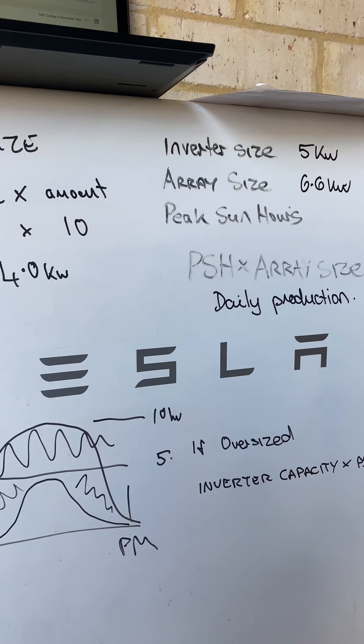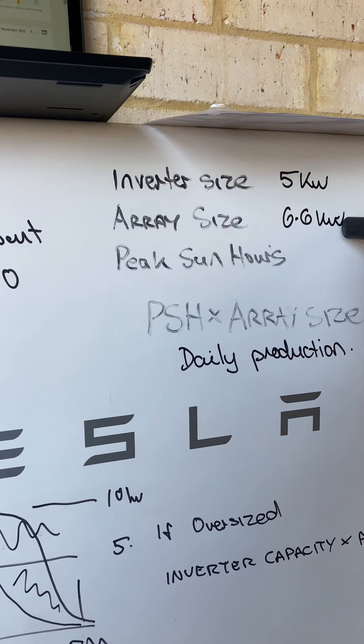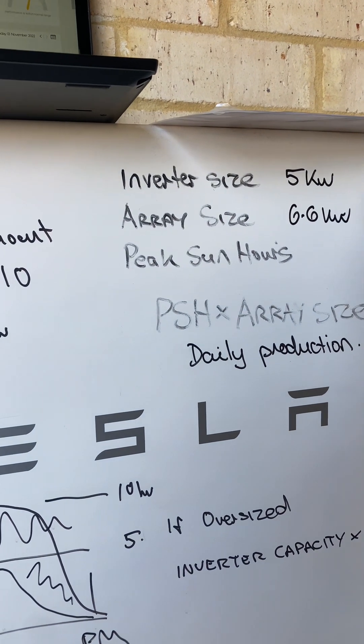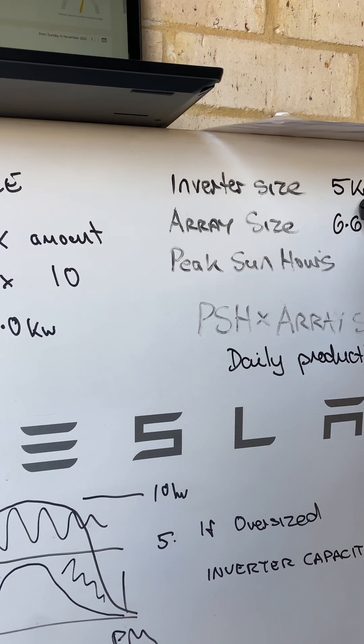Now, most solar systems where I live, the inverter will be 5 kilowatt, the solar array will be 6.6. So you would absolutely expect more than 16 kilowatt hours. Because some of that power's going to get clipped.